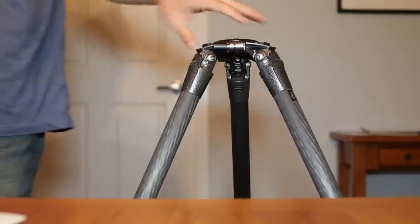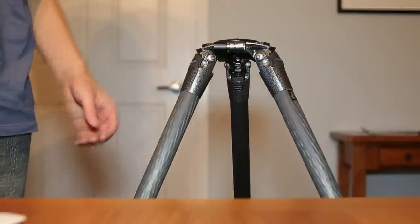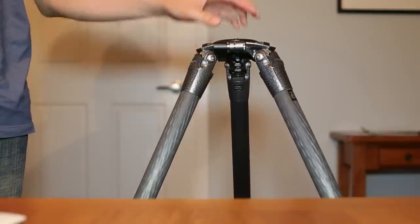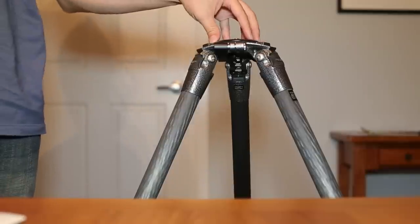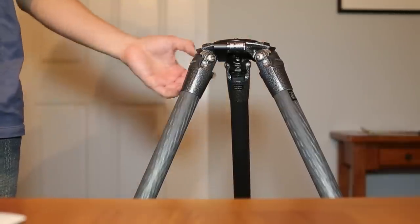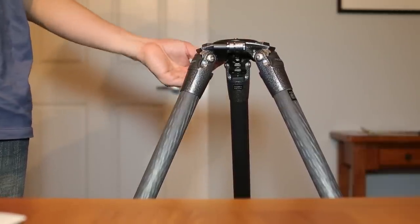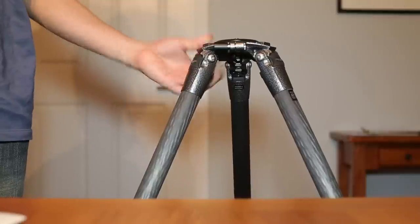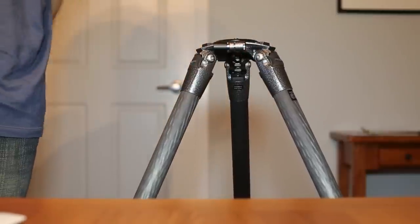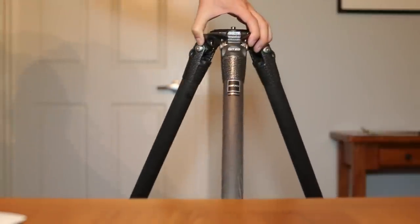And I do recommend the new versions for the added security features. In order for the center part to completely come out, you would need to have this loosened up and as well as push this locking plate. So it just has an extra measure of security to it. So I just wanted to do this video talking about the new features of the new Gitso tripods for 2012 and beyond.